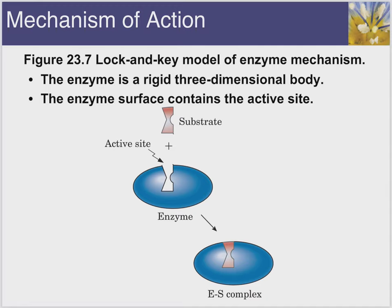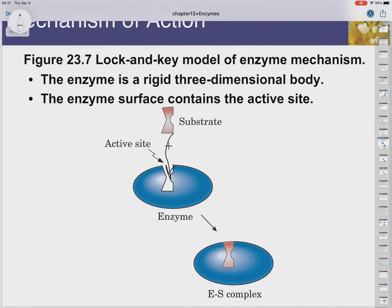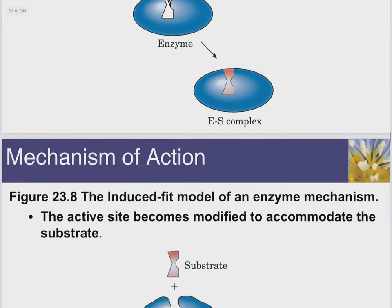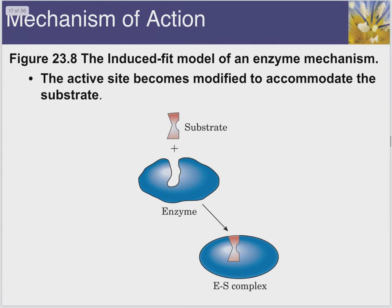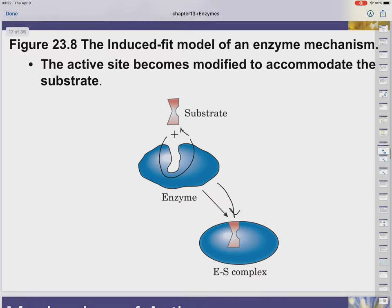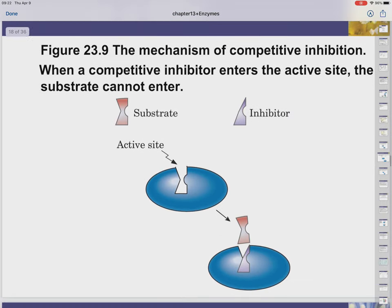So the way that an enzyme works is it's going to bind the substrate. Once in the active site of the enzyme, the reaction is going to take place. In the lock and key model, the substrate fits perfectly into the active site. In the induced fit mechanism, you can see that the active site does not specifically match the substrate, but they fit together anyways.